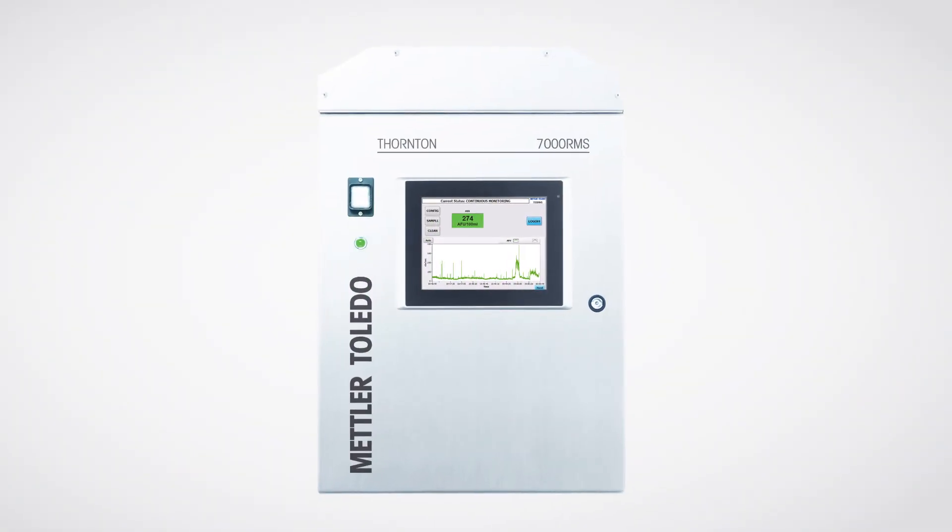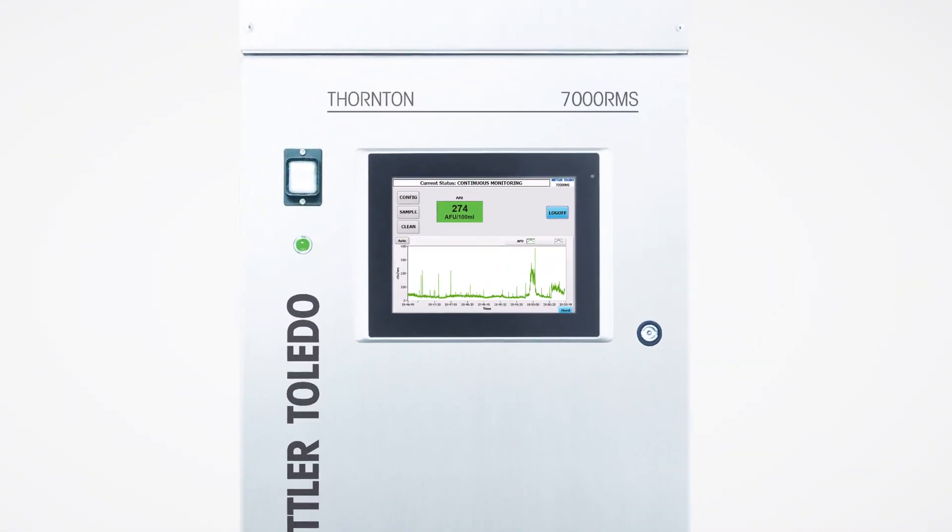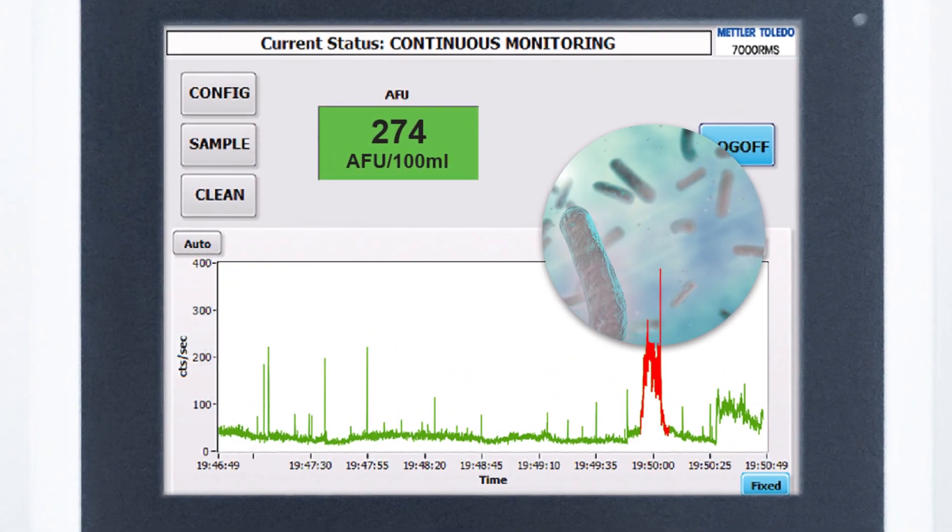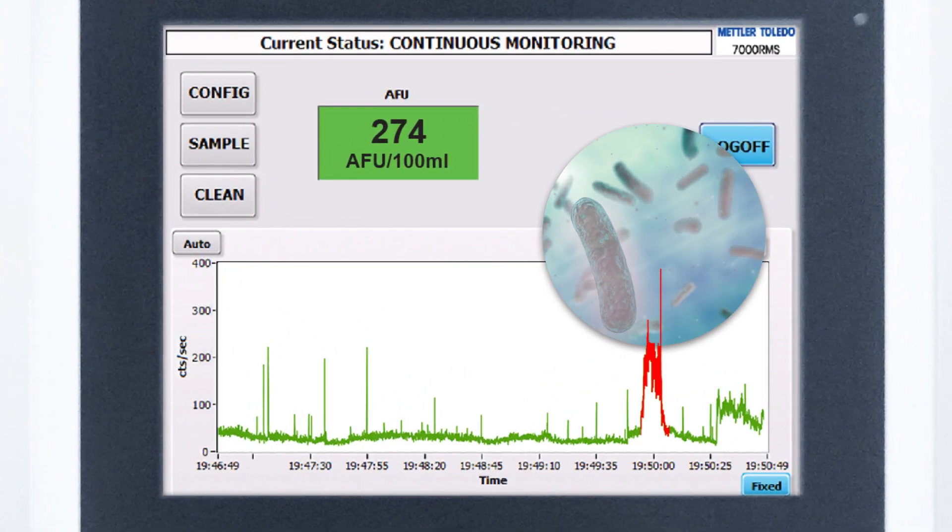When used in parallel with plate counting, the 7000 RMS Real-Time Microbial Detection Analyzer can help you react quickly to any trend or excursion before it becomes an event, giving you complete process transparency for minimized risk and real-time water release.